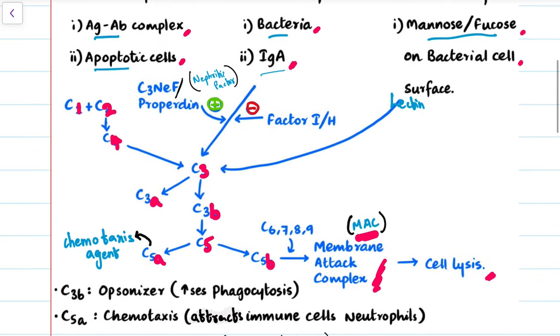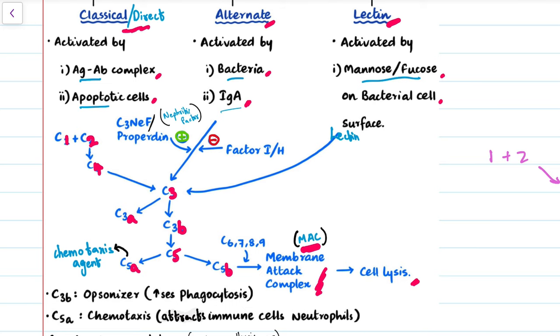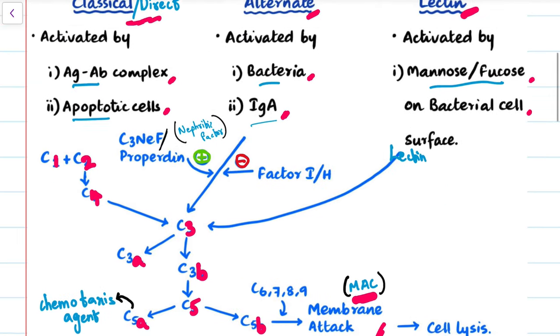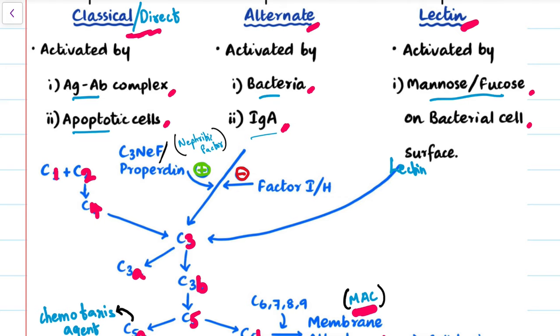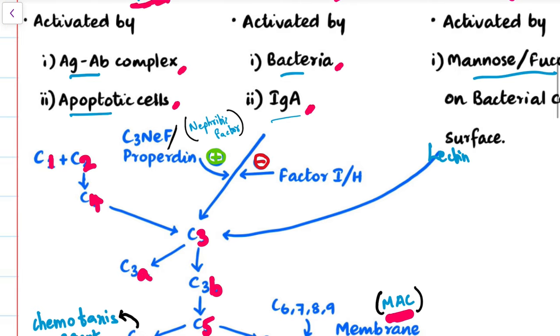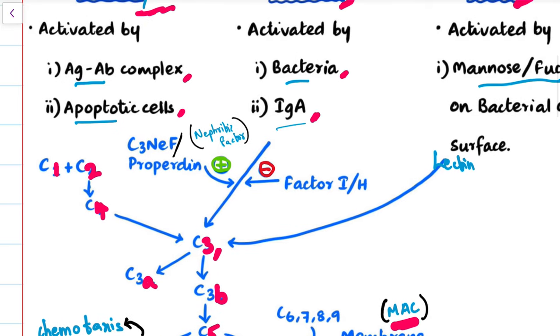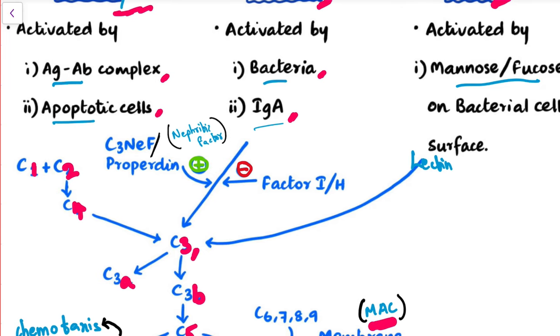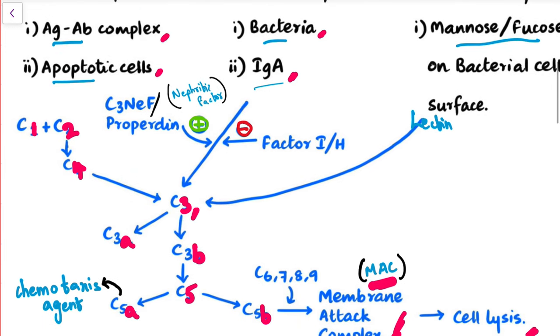The alternate pathway is activated by bacteria and immunoglobulin A. This activates C3, and this is promoted by the nephritic factor or properdin. These factors stimulate this action, whereas factors I or factor H inhibit it. C3 gets activated, then C3b activates C5, and C5 turns into C5b. C5b along with C6, C7, C8, C9 forms the MAC complex, and MAC causes cell lysis.